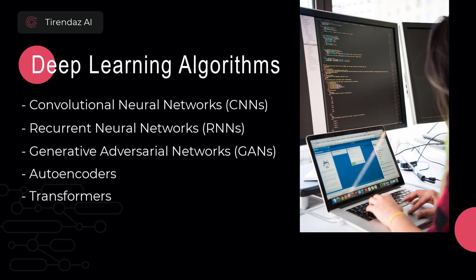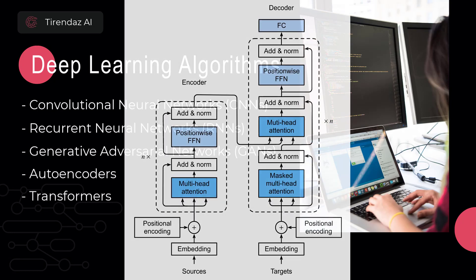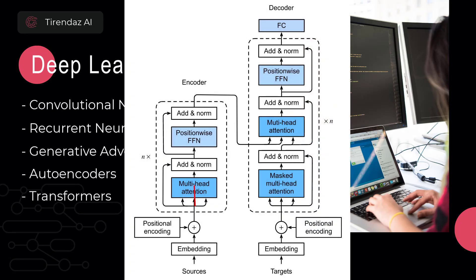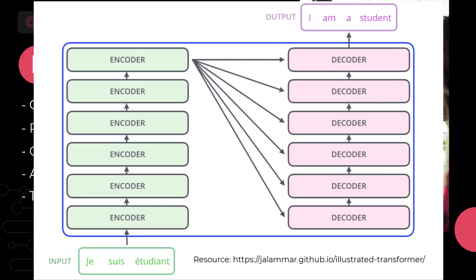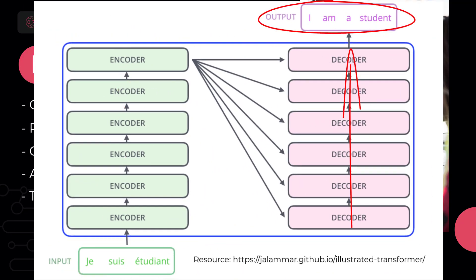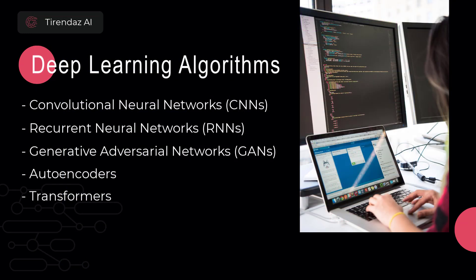Transformers is a deep learning architecture designed for NLP applications. This architecture reveals the meaning of text by performing mathematical calculations and deals with different aspects of the text using many attention mechanisms. It worked great on translation tasks. State-of-the-art models such as GPT and BERT were developed using the Transformers architecture. There are many more deep learning algorithms, but in this section we discussed the most important ones.